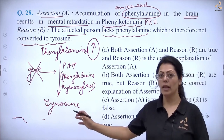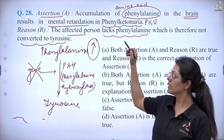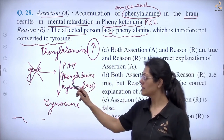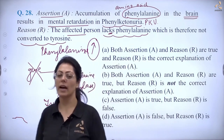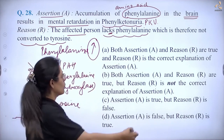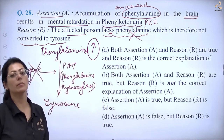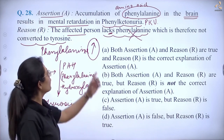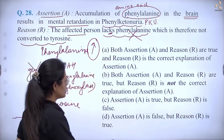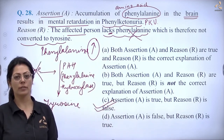But the answer is the other way around. The affected person actually lacks the enzyme phenylalanine hydroxylase — not the amino acid. So the reason is wrong here. The assertion is correct but the reason is false, so your answer will be option C.